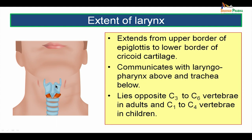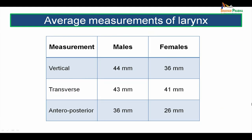An outline of the larynx shows how it extends between the cervical vertebrae C3 to C6 in adults. The average measurements of larynx in males: 44 mm vertically, 43 mm transversely, and 36 mm anteroposteriorly.